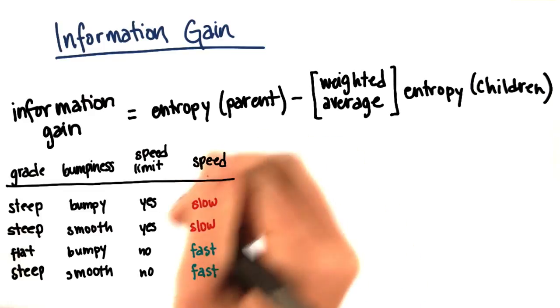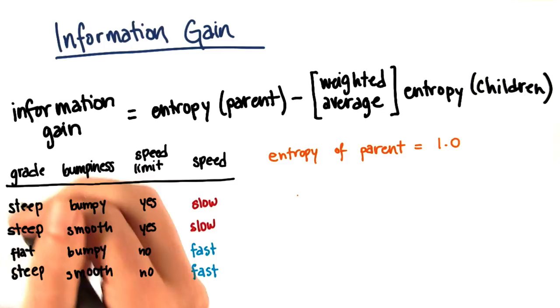Remember that when we started with all the data, the entropy of the parent was 1. Now let's use information gain to decide which variable to use when splitting.